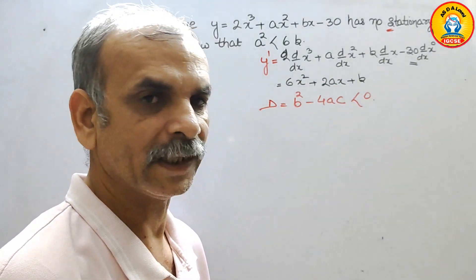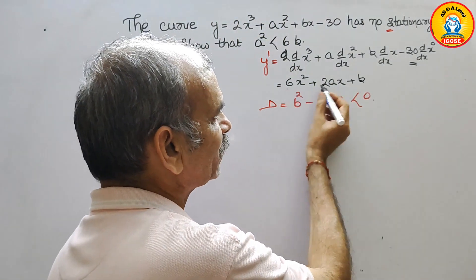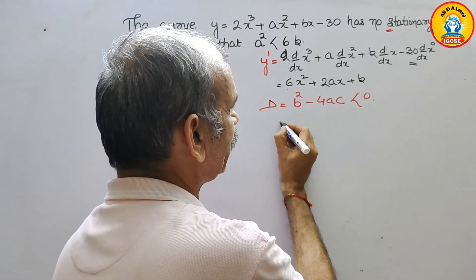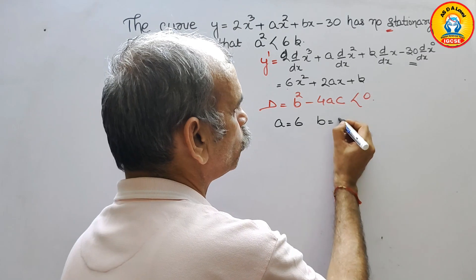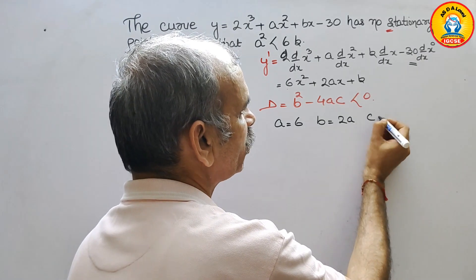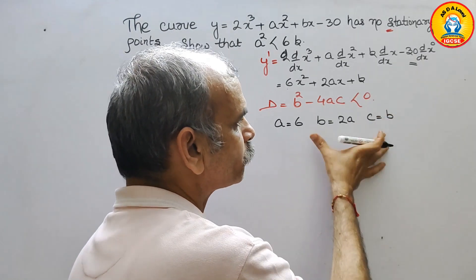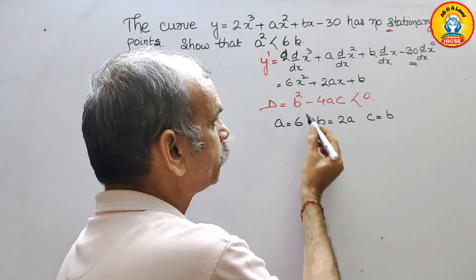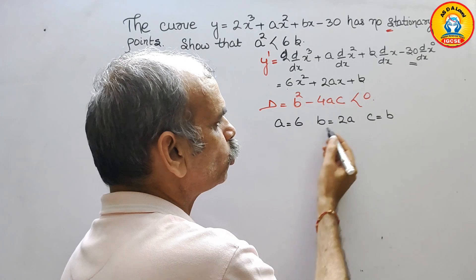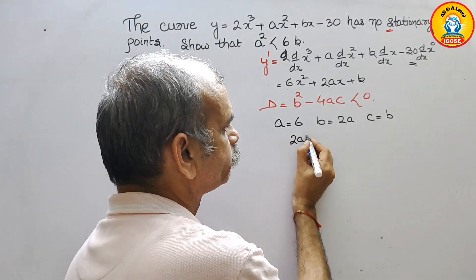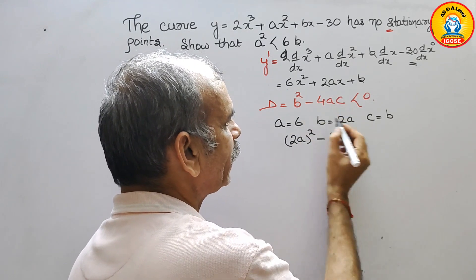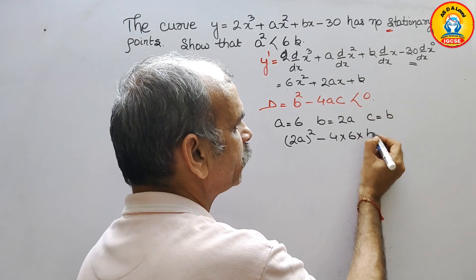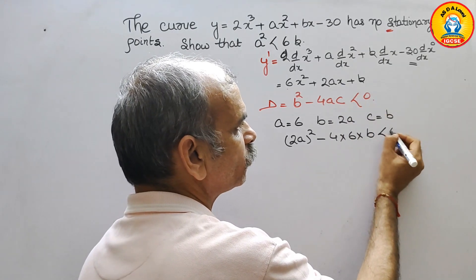Now what we will get? By seeing this we can say a equals 6, b equals 2a, and c equals b. Substitute this value here. b² that means (2a)² minus 4 into a is 6 into c is b which is less than 0.